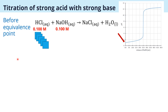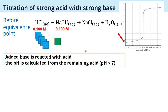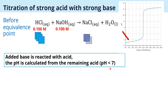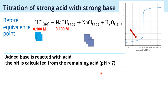Let's look at the pH change before equivalence point. As we add more sodium hydroxide, more salt forms and less acid remains — pH increases. We keep adding base and use the same calculation pattern each time.